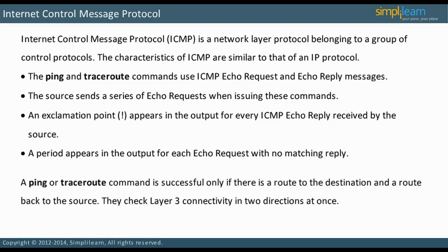A ping or traceroute command will be successful only if the source router has a route to the destination and the destination router has a route back to the source in their routing tables. This is why these commands are so useful — they check layer 3 connectivity in two directions at once. In the next slide, we will discuss how to use arguments to the ping command to find more information.